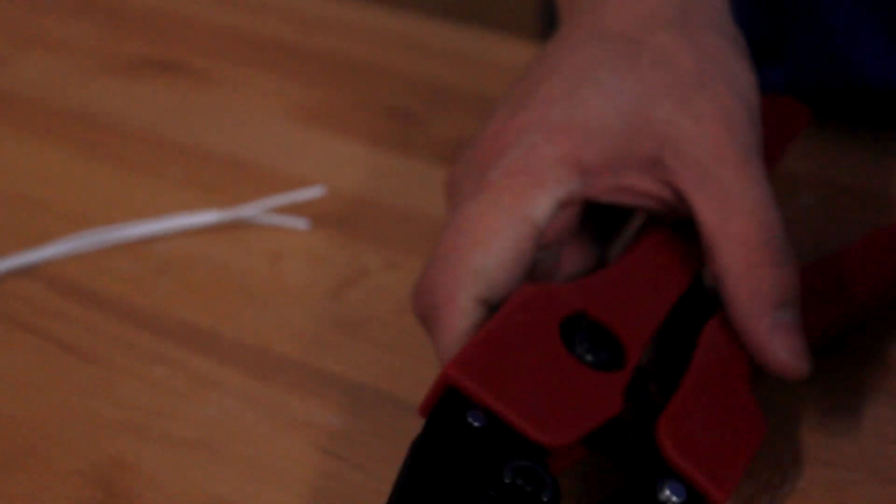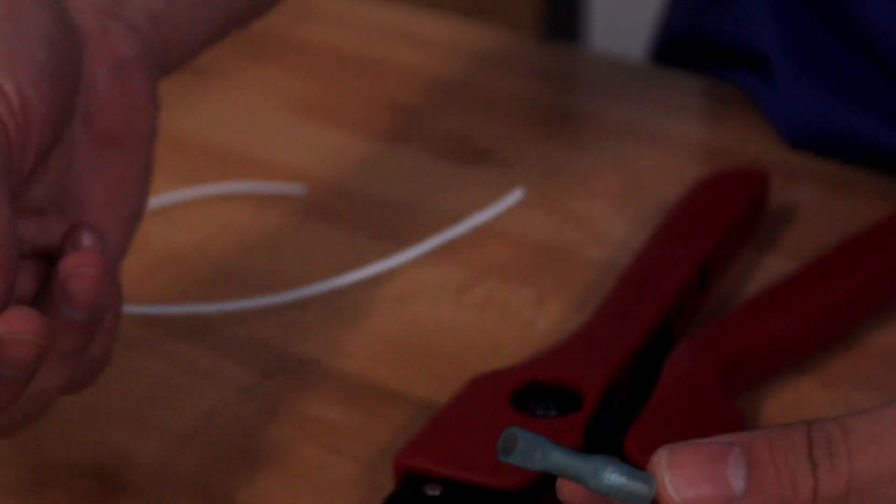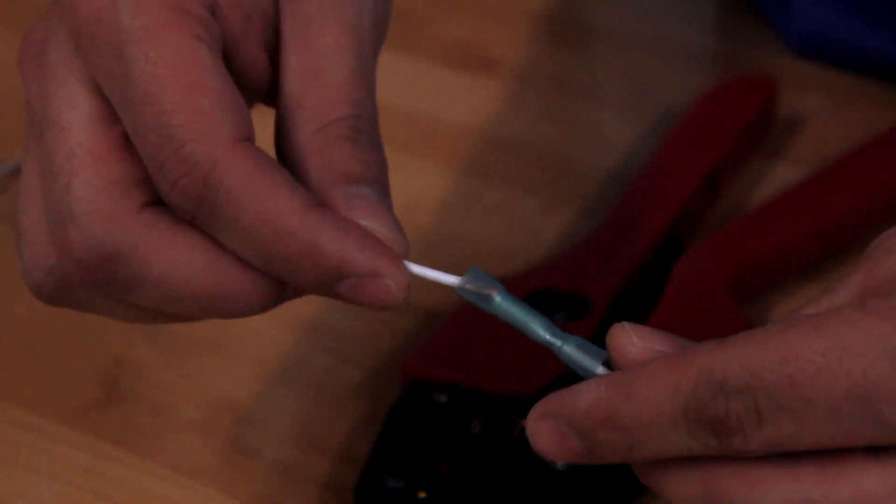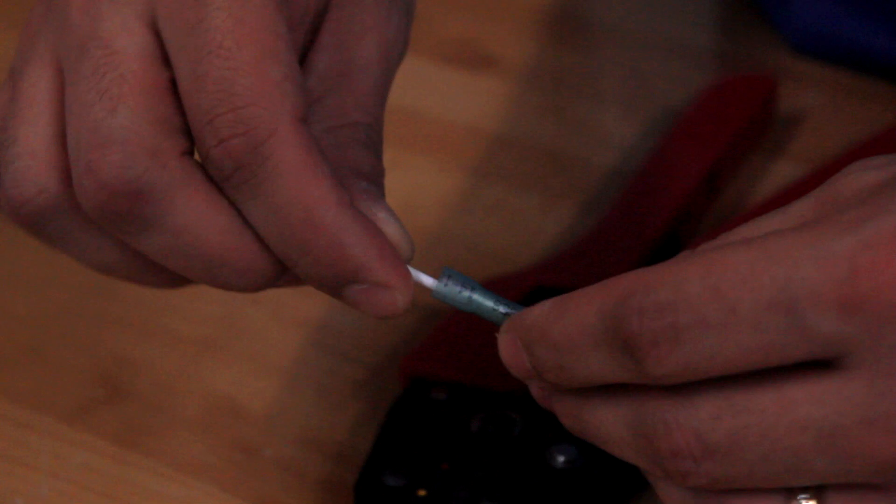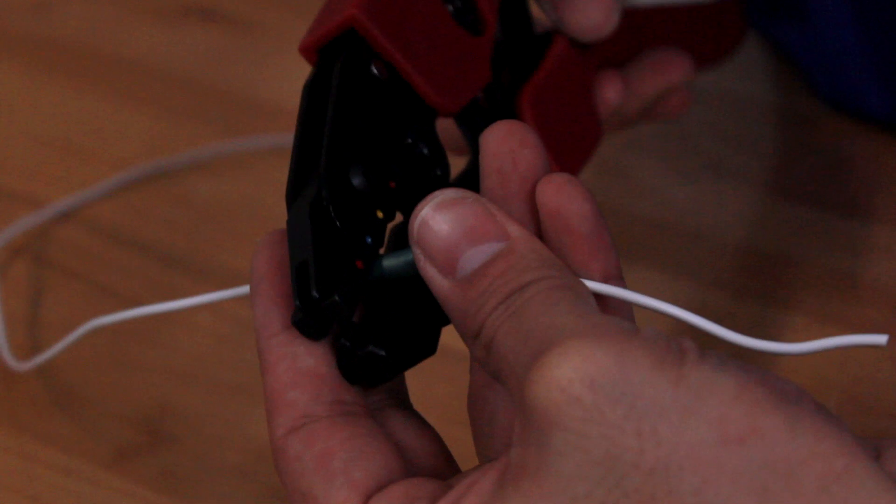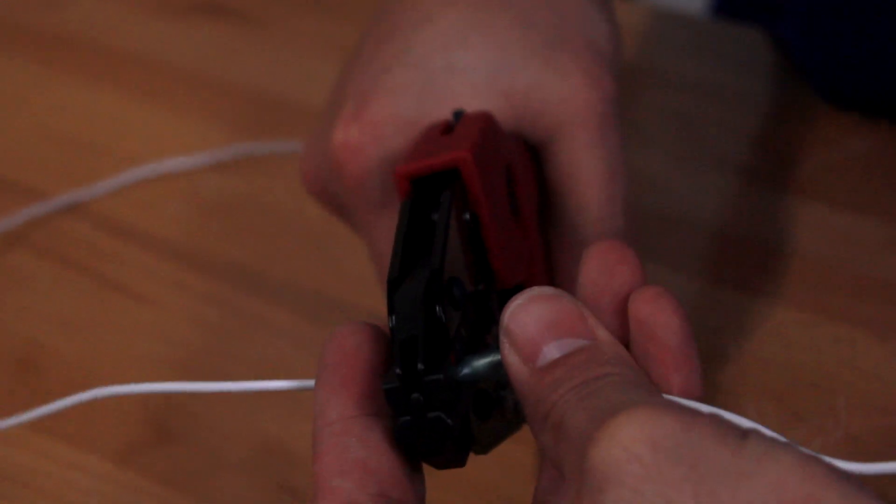To use this tool with heat shrink terminals, simply strip your wire, make sure you have the right terminal for the wire, insert, and you're going to use blue to blue, so we're going to line it right here with the blue, crimp it down.